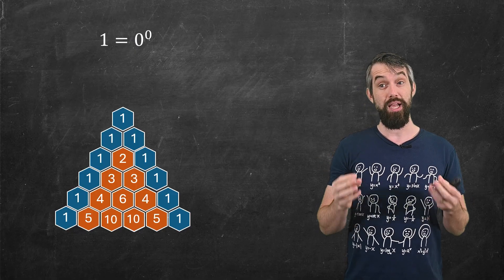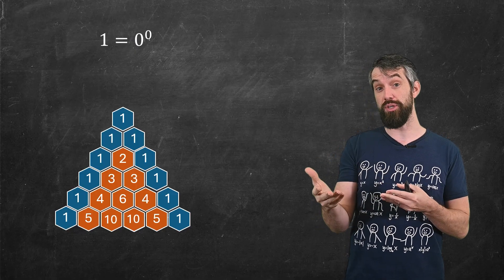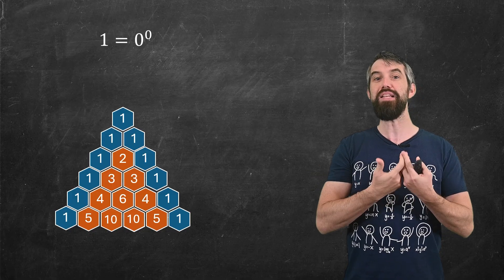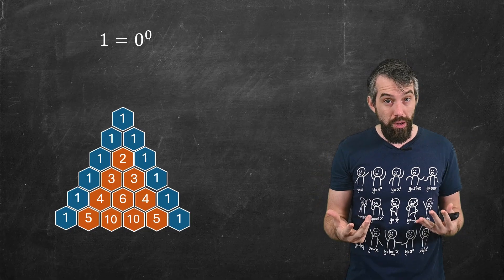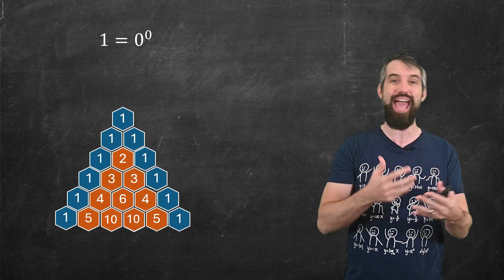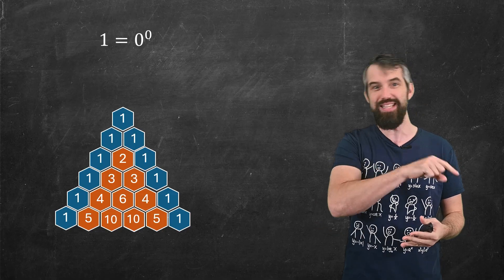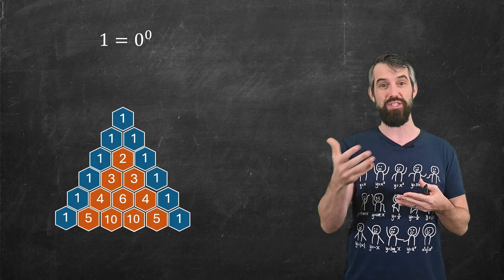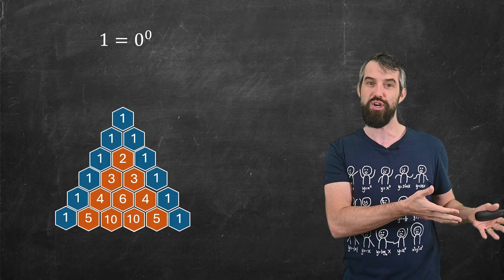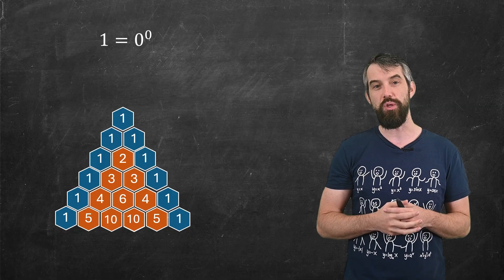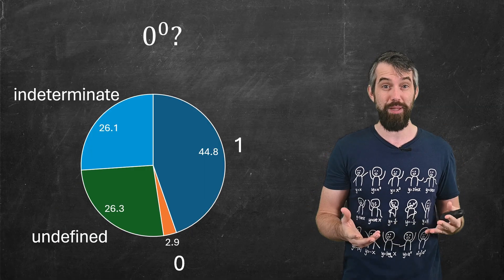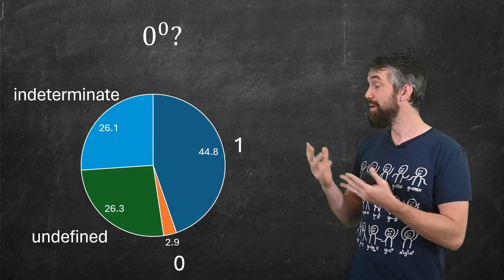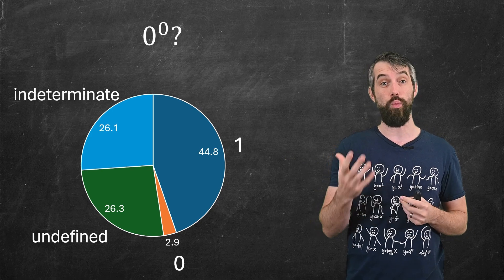So the point is this: defining zero to the zero to be equal to one makes this formula true in all of the cases. And I don't have to have this extra restriction written down except in the case when x is equal to zero.